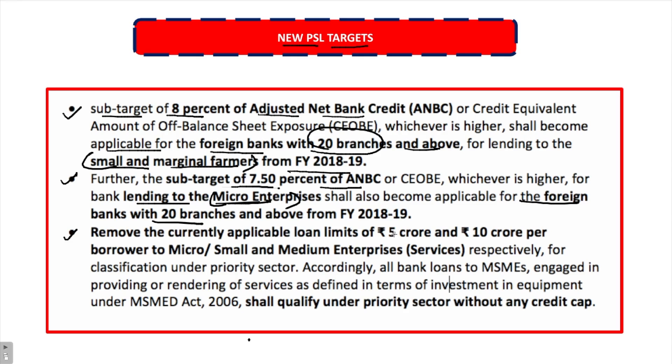The third revision: the currently applicable loan limits of 5 crore and 10 crore per borrower to micro, small and medium enterprises in the services sector have now been removed. These loans shall now qualify under priority sector without any credit cap. The latest priority sector guidelines were announced in 2015.